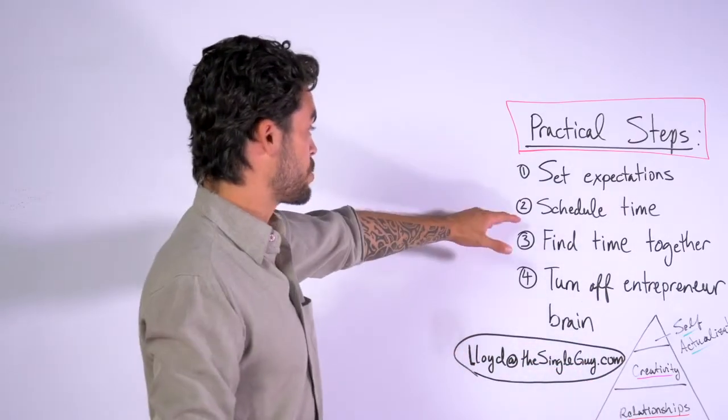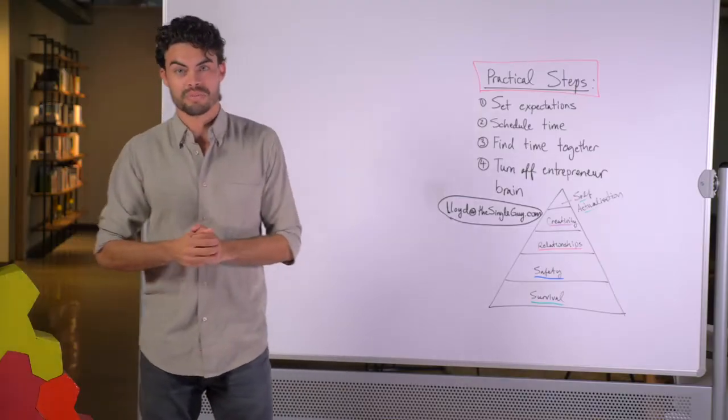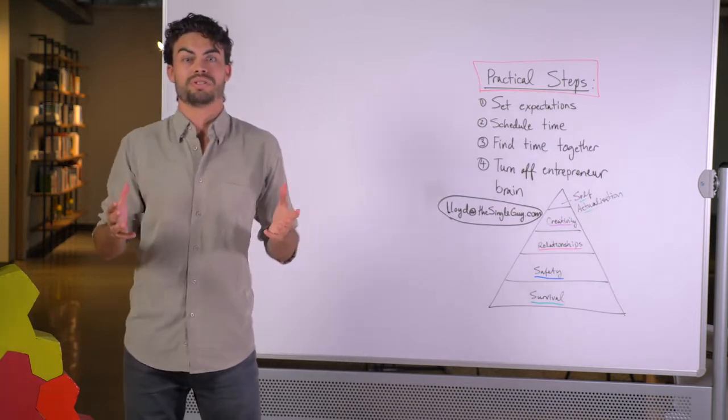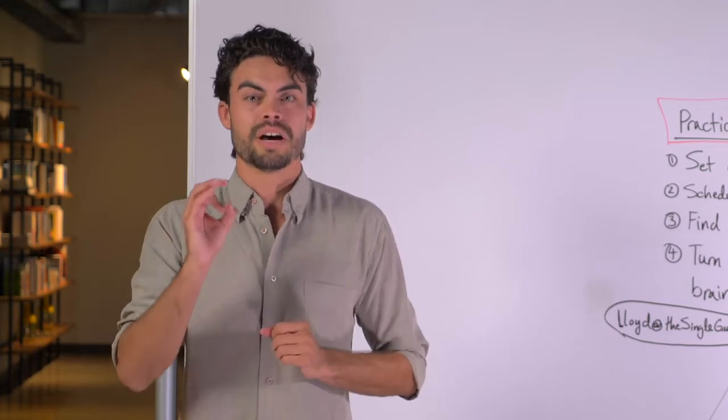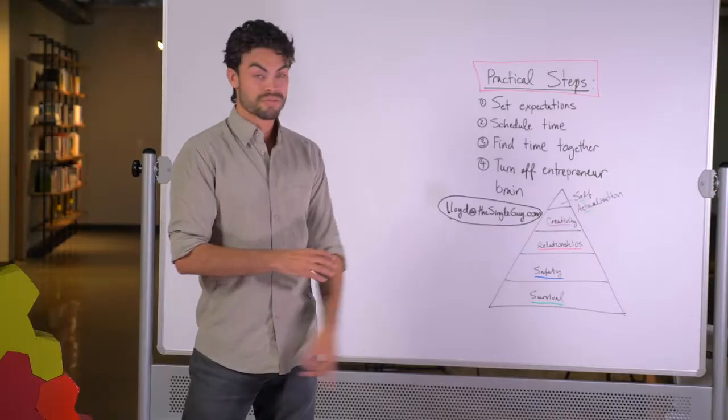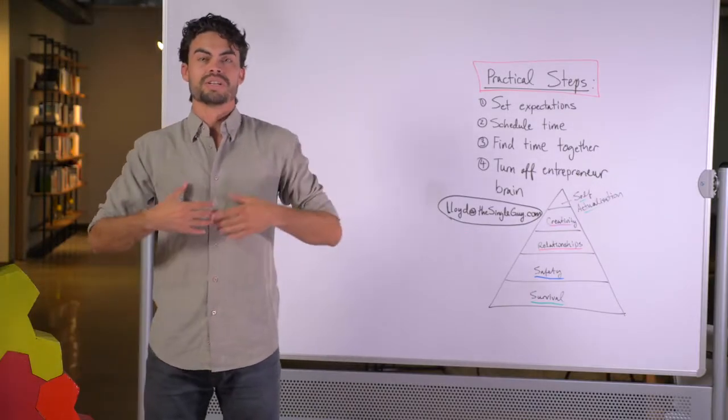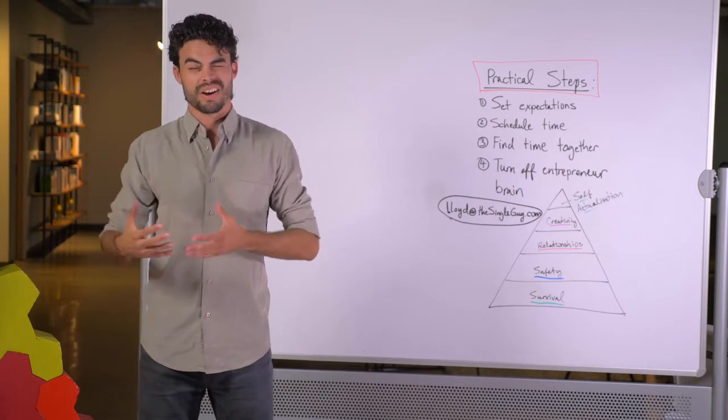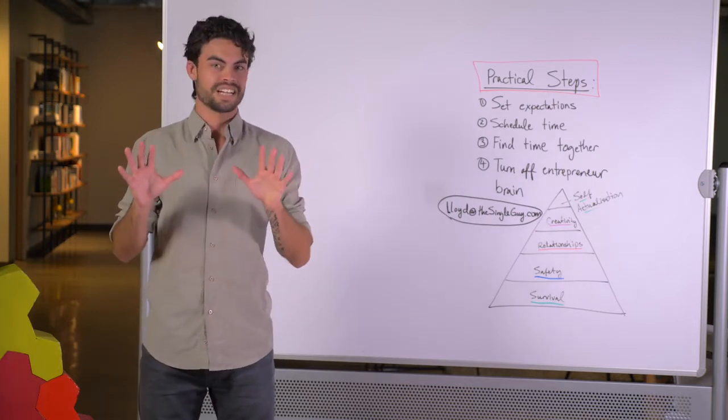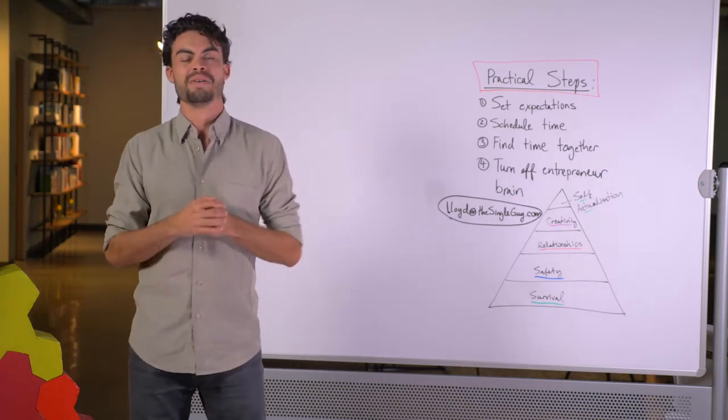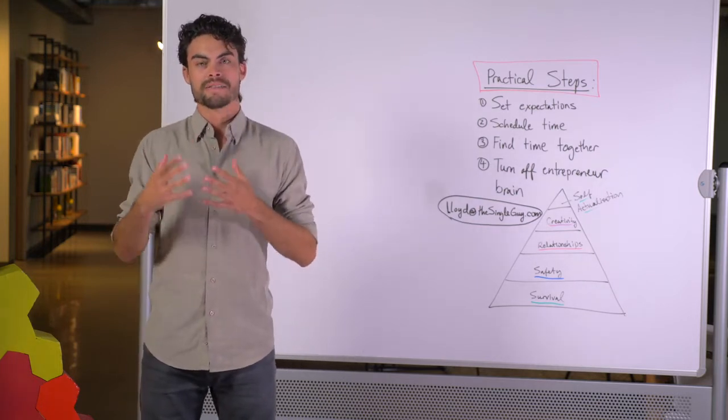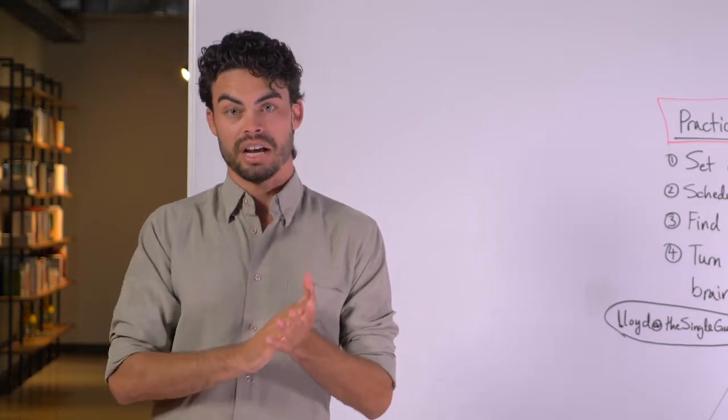Now, the second thing that you wanna do is you wanna schedule time. The funny thing is we schedule time for business, but how often do we schedule time for our personal lives and with our significant others? Probably not as much, but it's just as important, if not more important, as you've seen from the Maslow's hierarchy of needs. So schedule time in with your significant other. Now, I know people are sometimes resistant to schedule time for these sorts of things, especially when it comes to maybe more personal issues, but you wanna schedule time in, and basically what you wanna do is see if your schedules are gonna align.